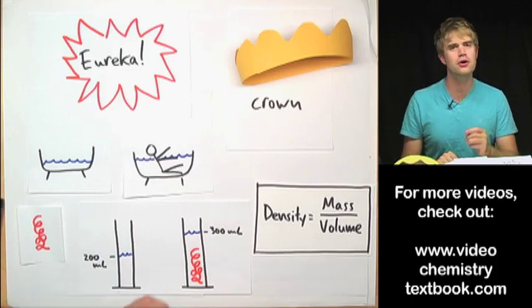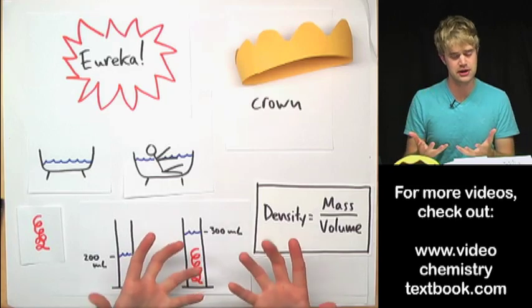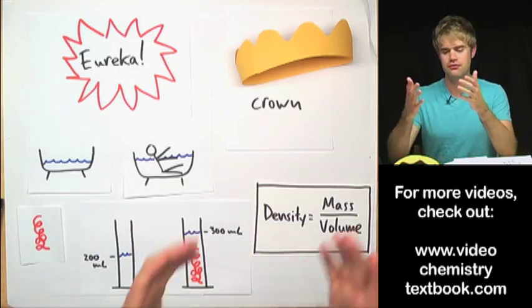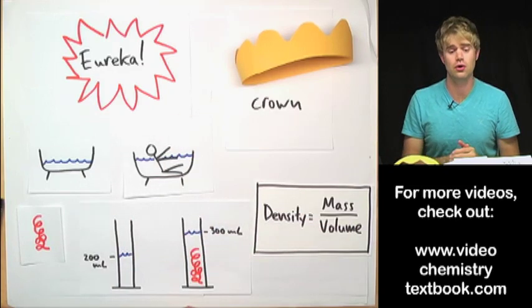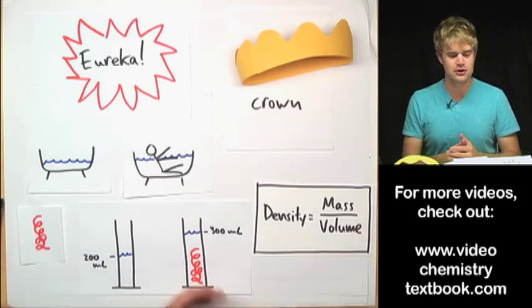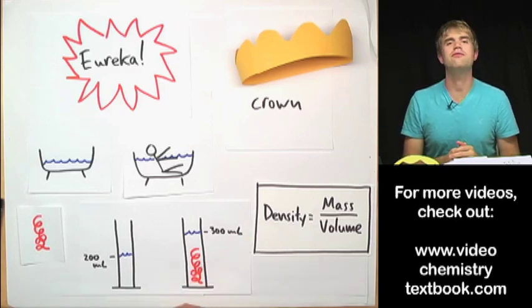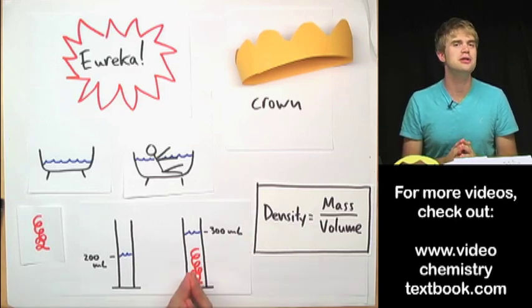That may be the case and it may be that Archimedes actually used something called buoyancy instead of density to figure out whether the crown was made of gold. Either way, it's a great story, people tell it all the time so I hope you enjoyed learning about how density let a king figure out whether or not he'd been cheated.